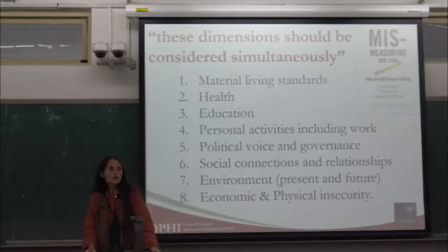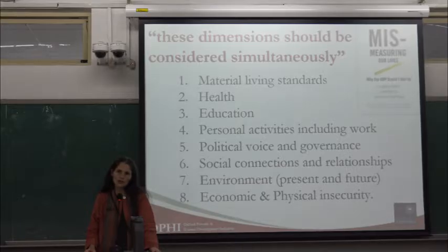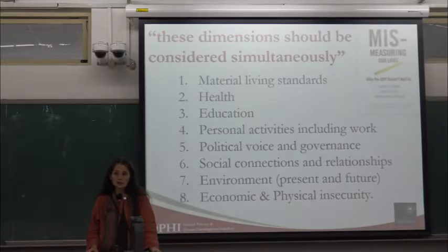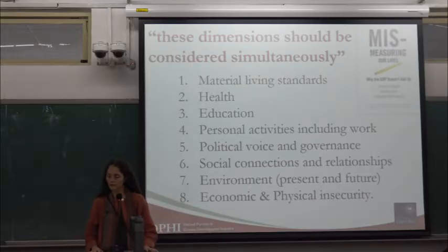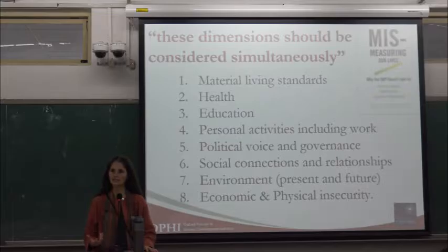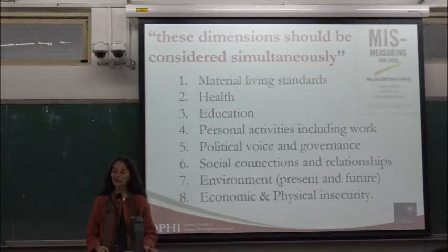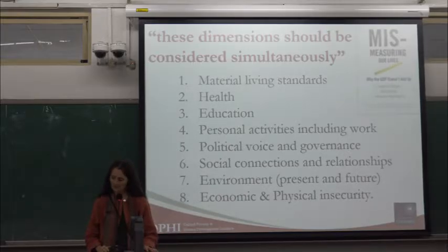The Stiglitz-Sen-Fitoussi (Sarkozy) Commission focused on well-being and proposed eight dimensions any well-being measure should consider: material living standards, health and education, work and other personal activities — including volunteerism, raising children, housekeeping, and cooking — political voice and governance, social connections and relationships, the environment, and both economic and physical security. We are focusing on poverty as a subset of well-being, and what we use will not perhaps be wider than this set.